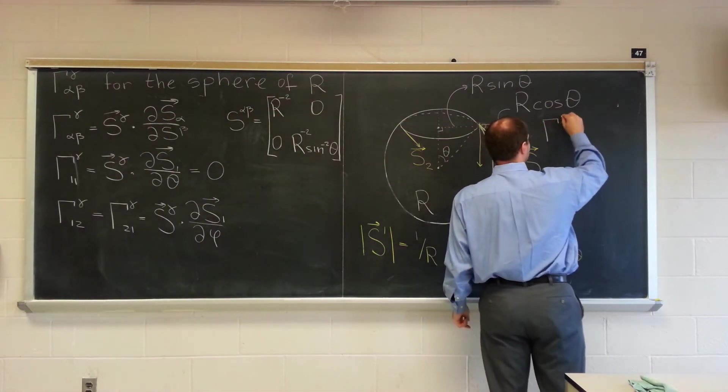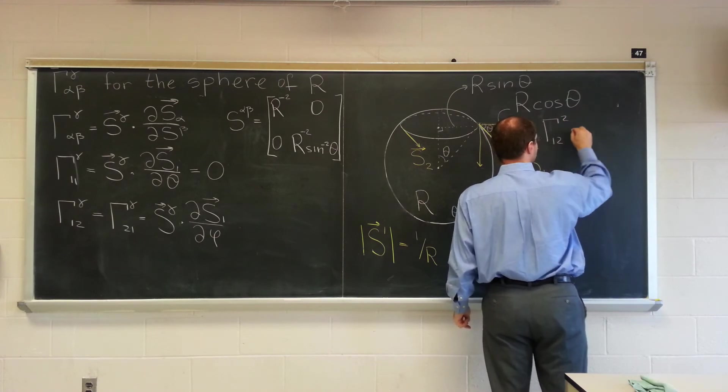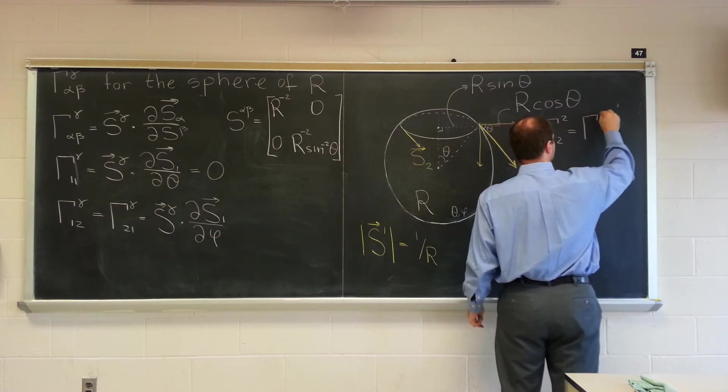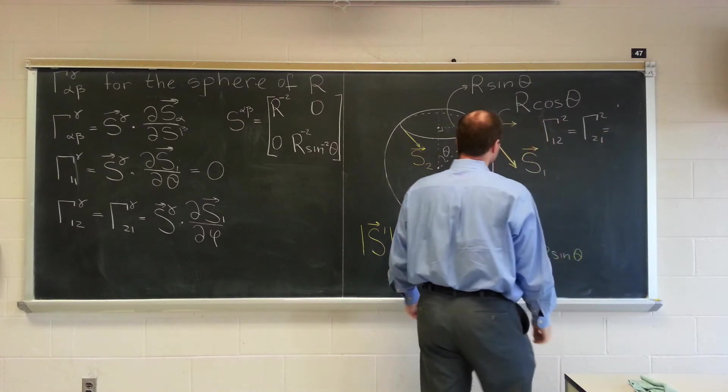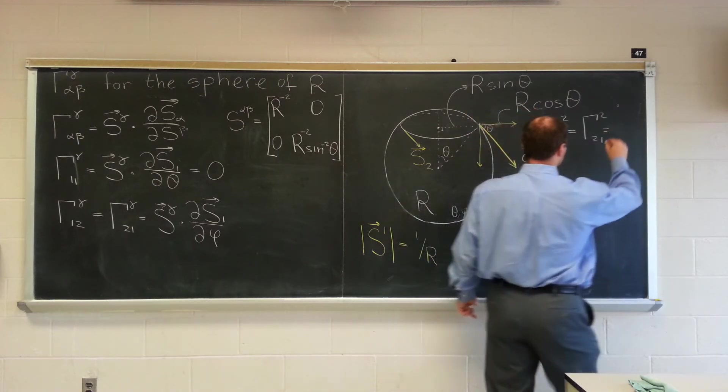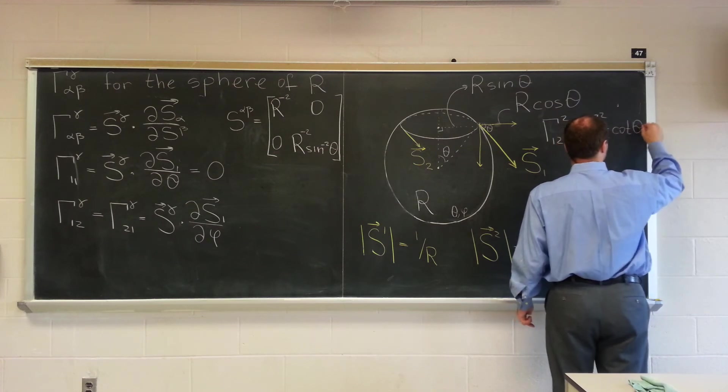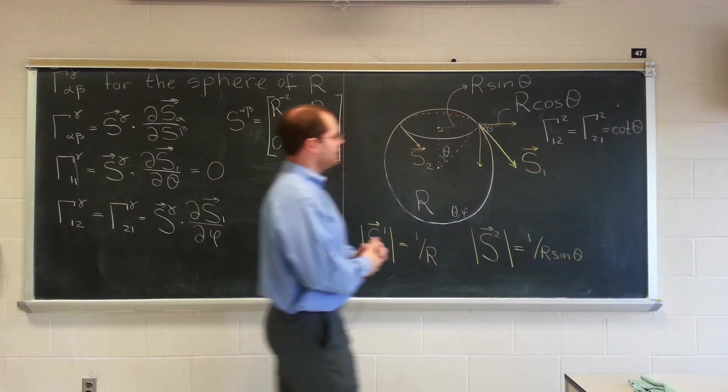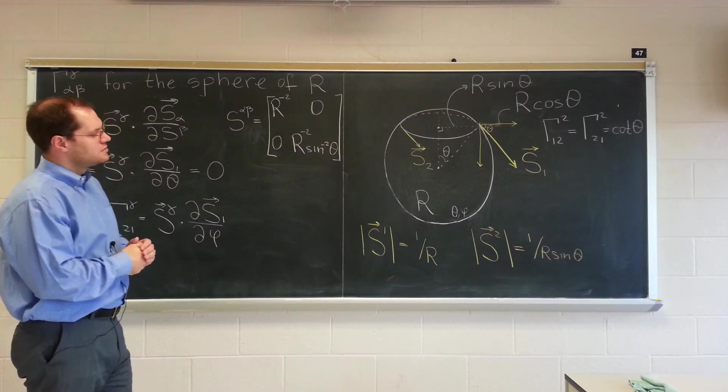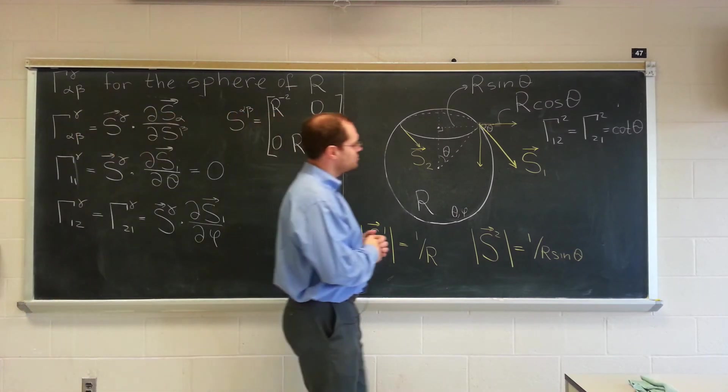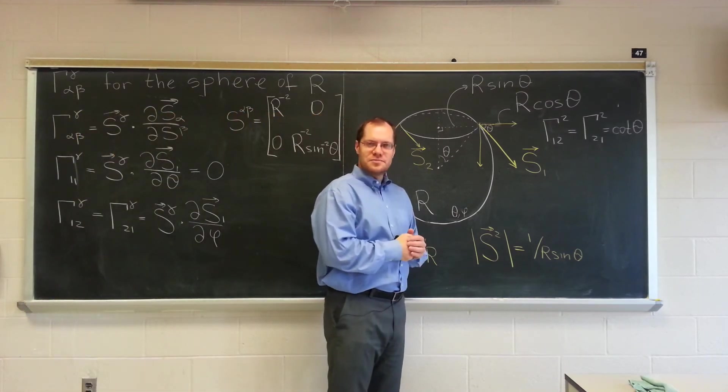When we dotted with S2, it'll be cosine theta over sine theta. When dotted with S1, it'll be zero because it's orthogonal to S1. So here's what we've concluded: we have a non-zero entry in gamma 2, 1, 2, and gamma 2, 2, 1, and it equals, according to my calculations, cotangent theta. That's our first two non-zero entries of the Christoffel symbol.